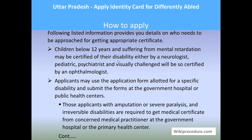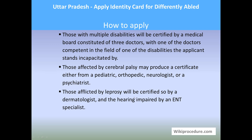Applicants may use the application form allotted for a specific disability and submit the form at the government hospital or a public health center. Those applicants with amputation, severe paralysis, or irreversible diseases are required to get a medical certificate from the concerned medical practitioner at the government hospital or primary health center. Those with multiple disabilities will be certified by a medical board constituted of three doctors, with one doctor competent in the field of one of the applicant's disabilities.